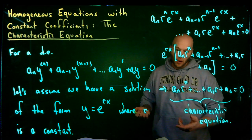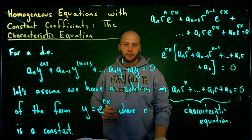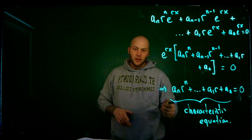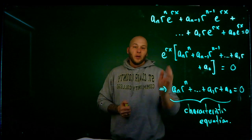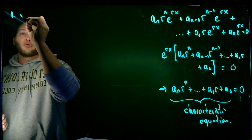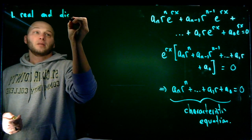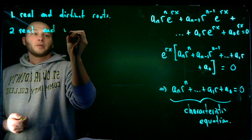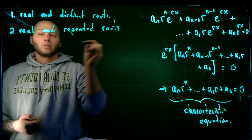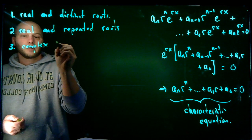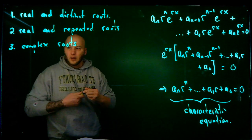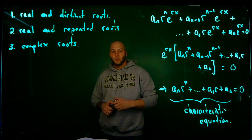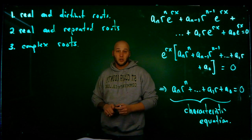There are some more details to go through. Depending on the solutions of the characteristic equation, we might have to do different things. Here are the three scenarios: one, we have real and distinct roots; two, we have real and repeated roots; three, we have complex roots. Depending on the type of solutions for the characteristic equation, that tells me what I have to do to get the solution to the differential equation, and these will be covered in subsequent videos.